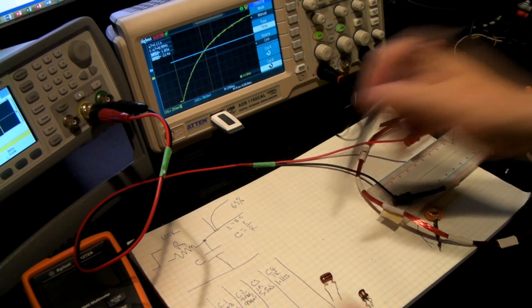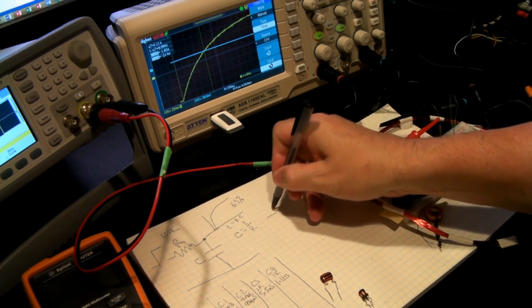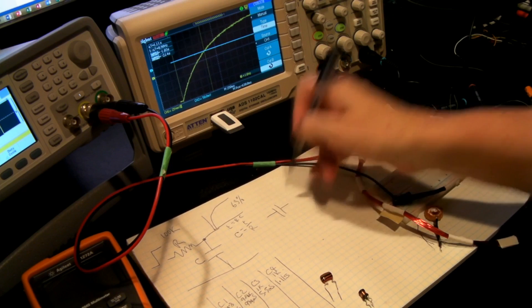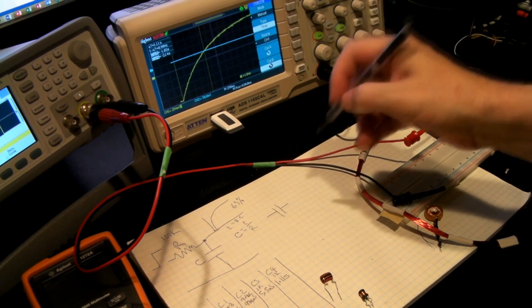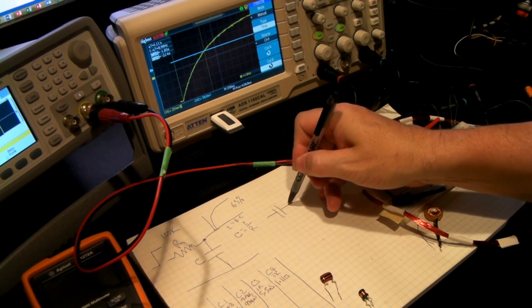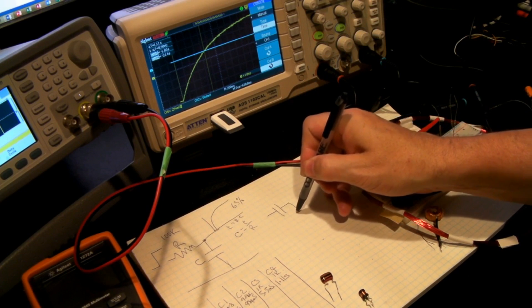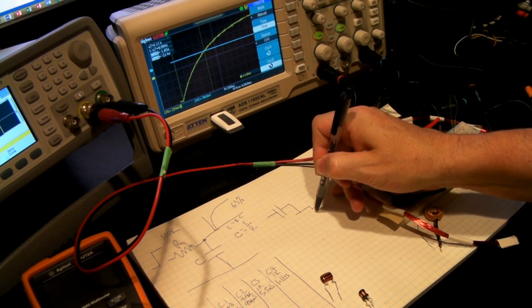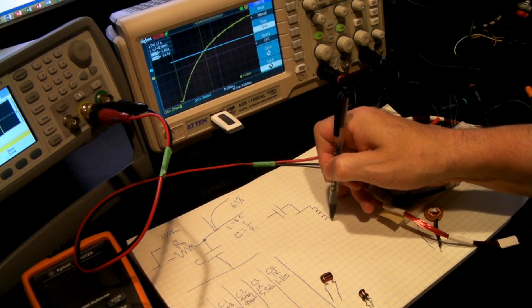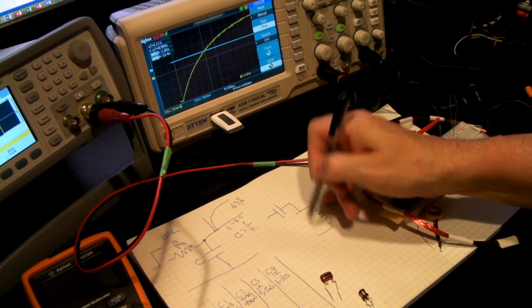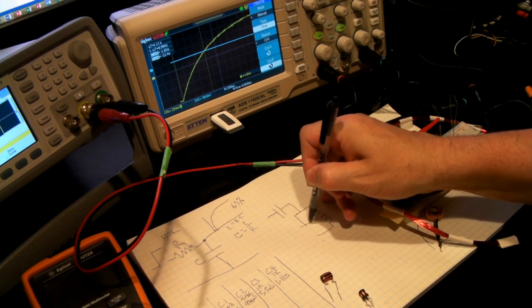And what we're going to do is use a capacitor, and then we're going to feed that into a tank circuit. So a typical tank circuit is basically an inductor, which in this case is our unknown element, and a capacitor.